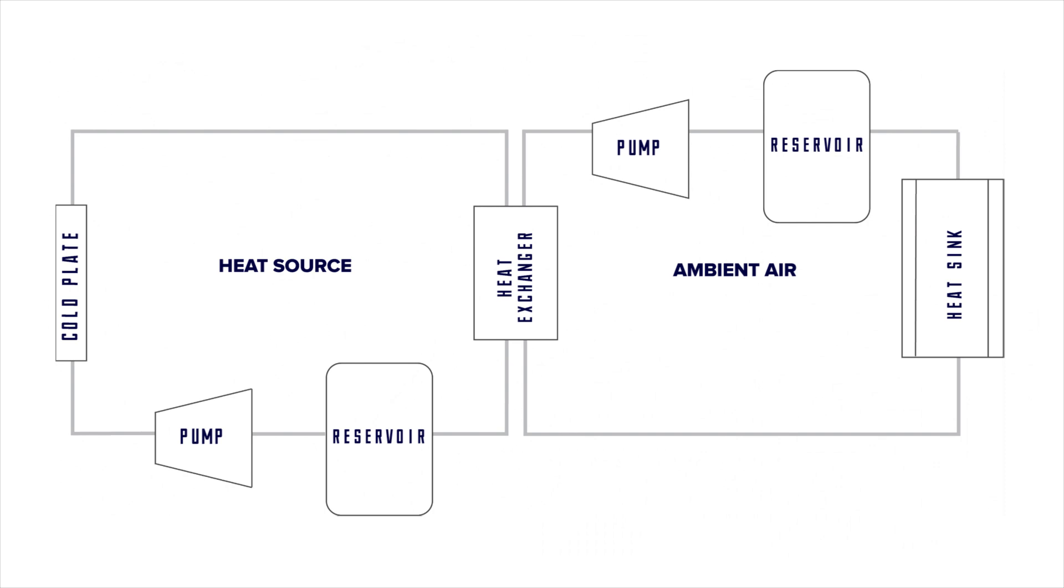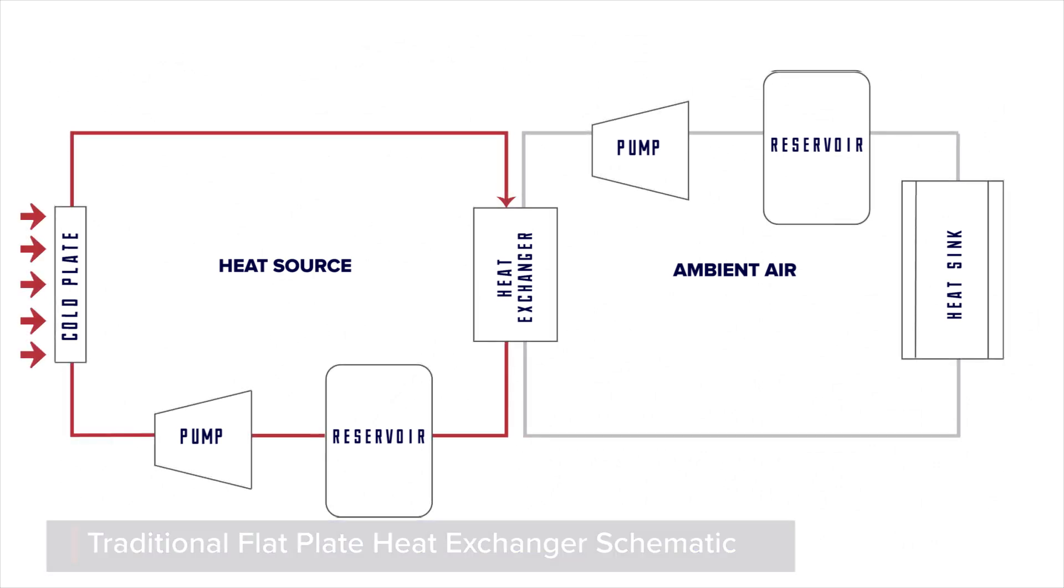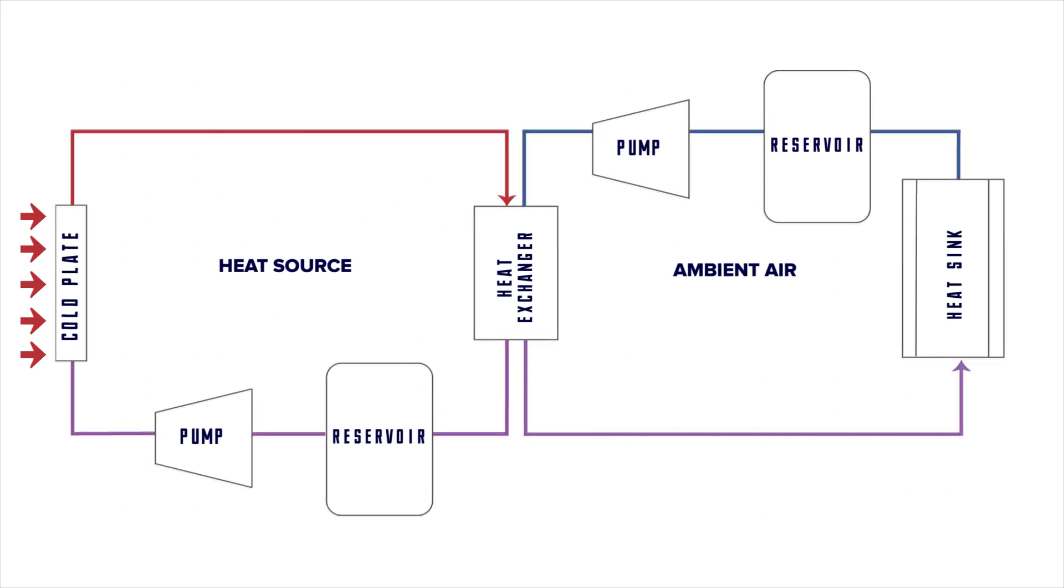In a traditional flat plate heat exchanger, a primary coolant or hot liquid stream takes heat from the critical components and exchanges heat with a secondary coolant loop. A secondary coolant loop will then transport heat to an ultimate heat sink downstream from the heat exchanger.